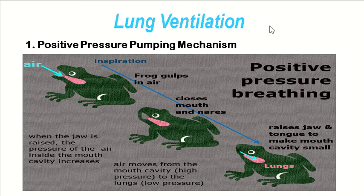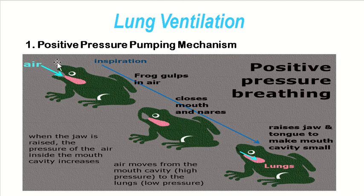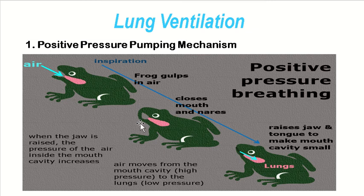To understand how they push air into their lungs, our model here is the frog. What happens is that as the floor of the frog's mouth is lowered, air enters through the external nares and through the opening itself. As air enters the buccal cavity, the external nares close, and then the floor of the mouth is raised. Once the floor of the mouth is raised, it now pushes air into the lungs.